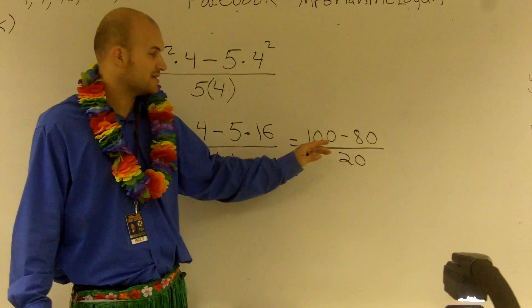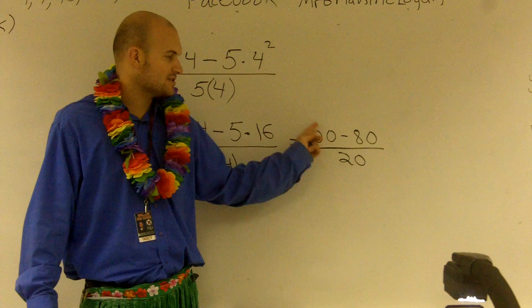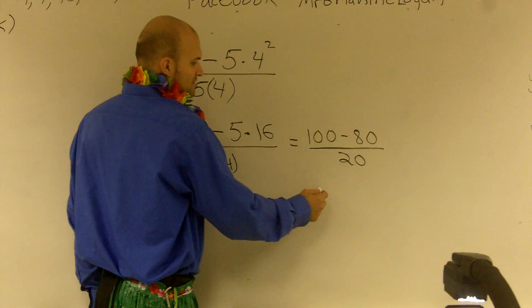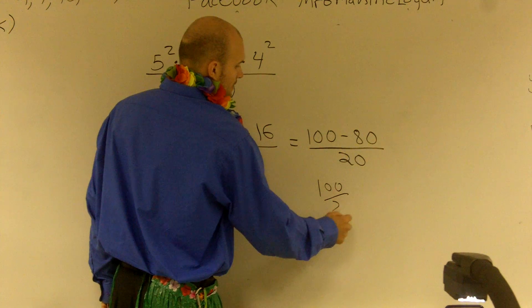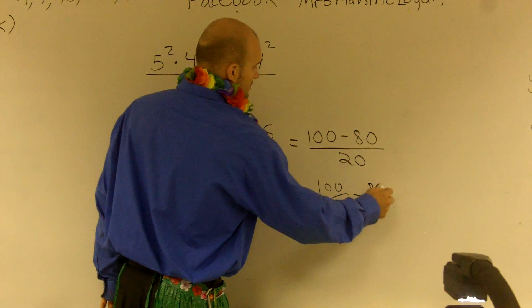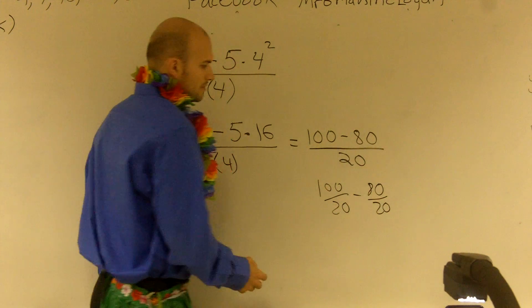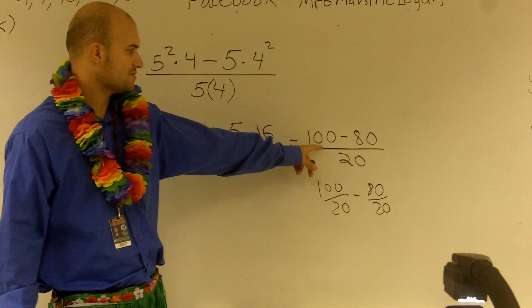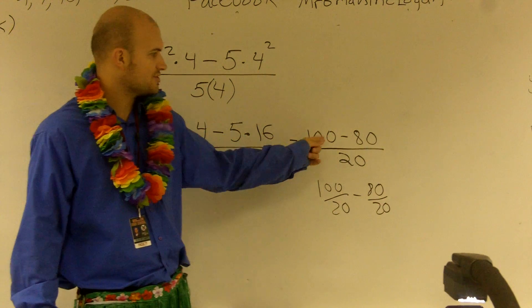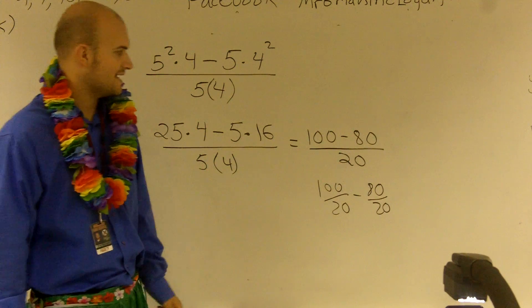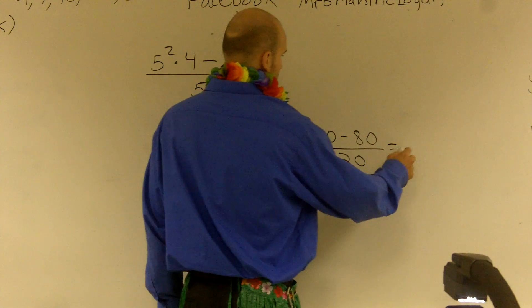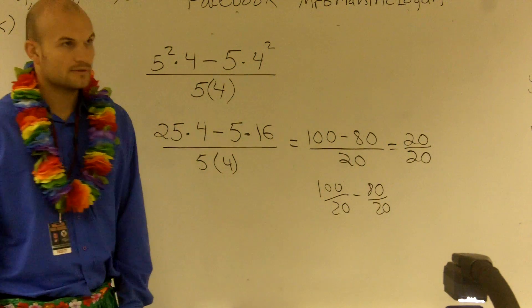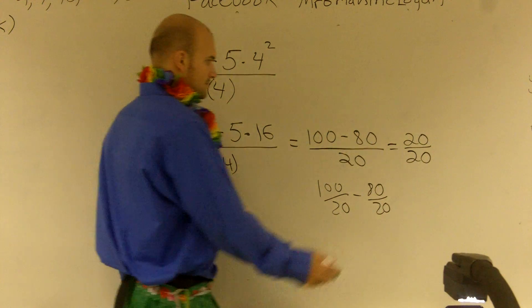Another way we could also do this is, since these are both divided by 20, we could actually split this up, or what we could also do is just do 100 minus 80, which is going to be 20, over 20, which is going to leave you 1.